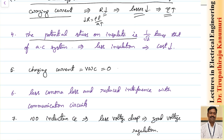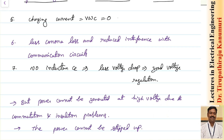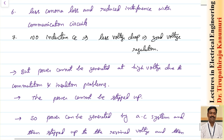The potential stress on the insulator is always decided by the peak value of the voltage. In the case of DC, peak value is the same as the RMS value. For the same peak value, the DC system needs only 1/√2 times the insulation of the AC system, so insulation required is less and cost of insulation is decreased. The charging current is given by V×ωC, where ω = 2πf. As frequency is zero, charging current is zero — there are no losses due to charging current.